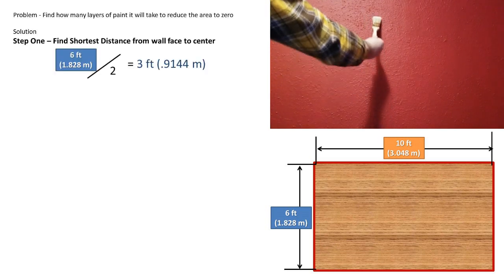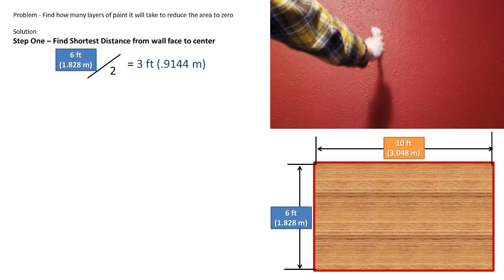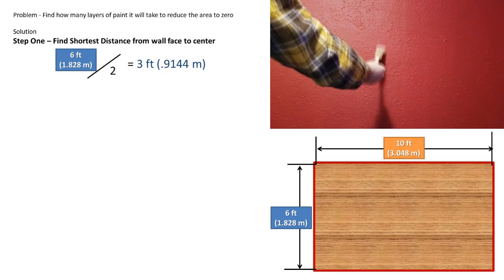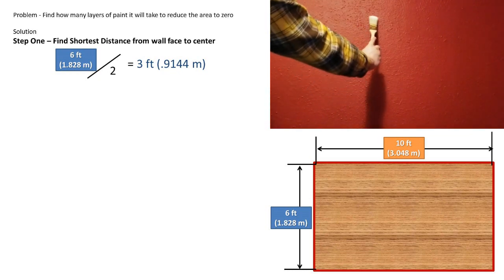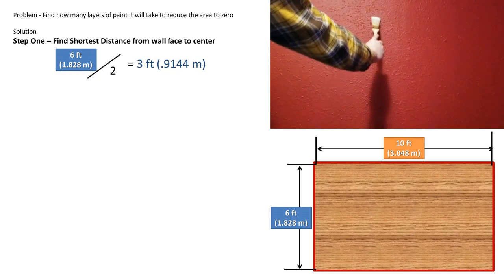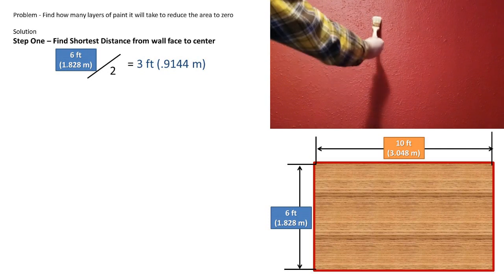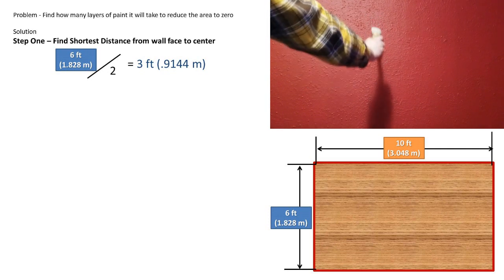Step 1. Find the shortest distance from the wall face to the center of the room. In this case, the shortest distance will be the short wall length of 6 feet divided by 2 because we'll be painting both sides of the room in one layer. We get a shortest distance from the wall to the center of the room of 3 feet.